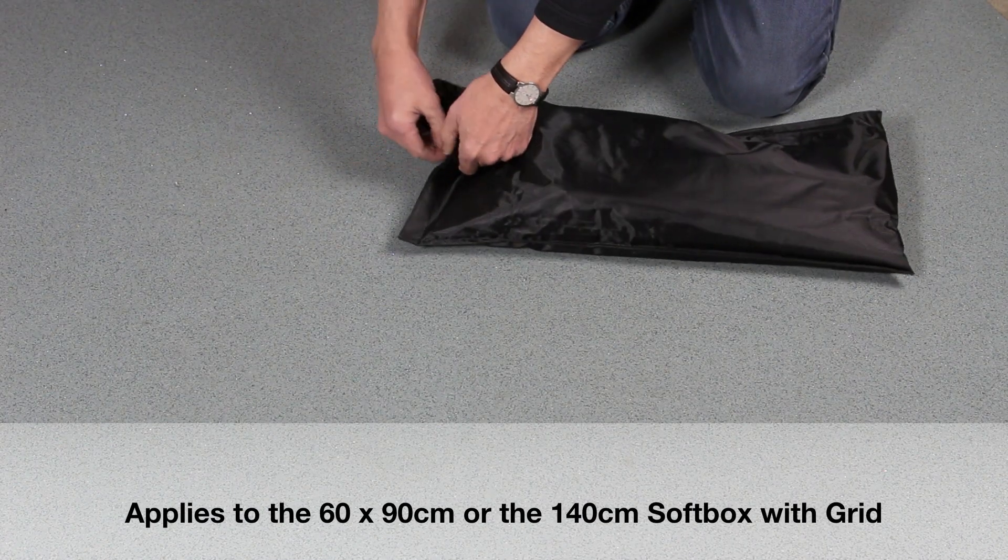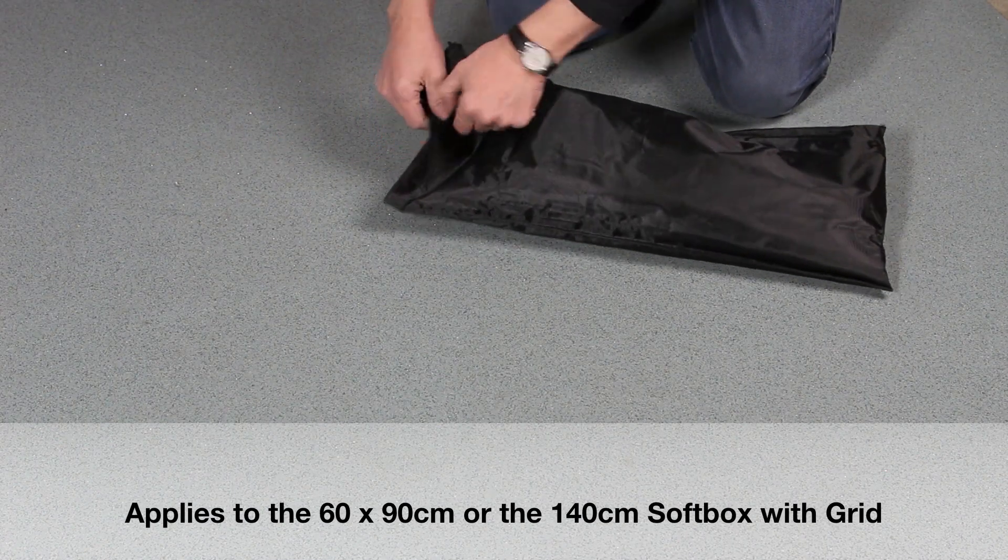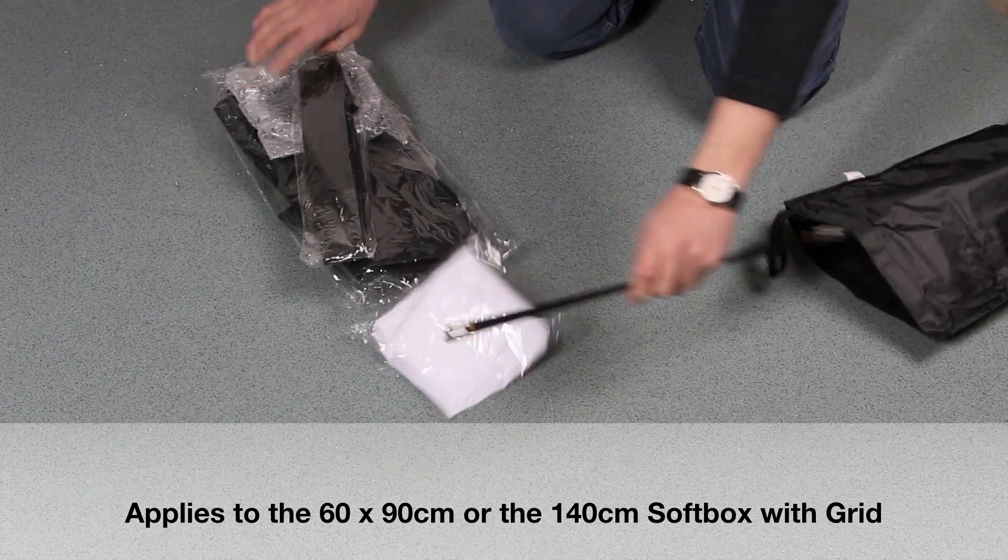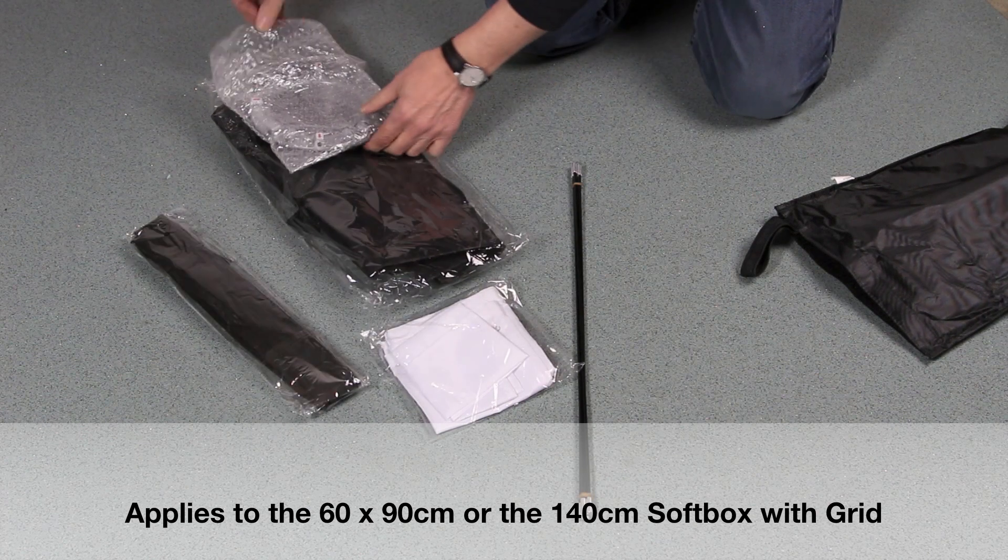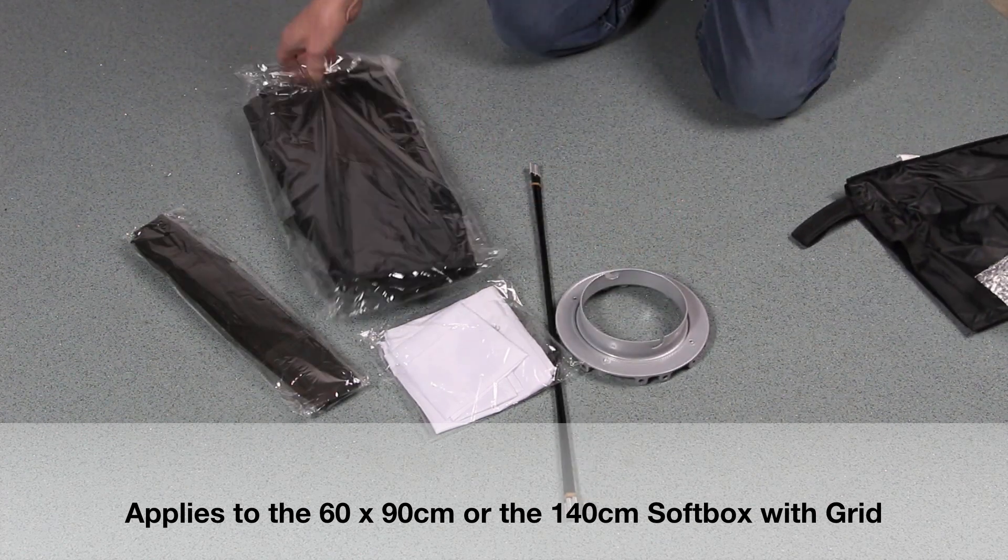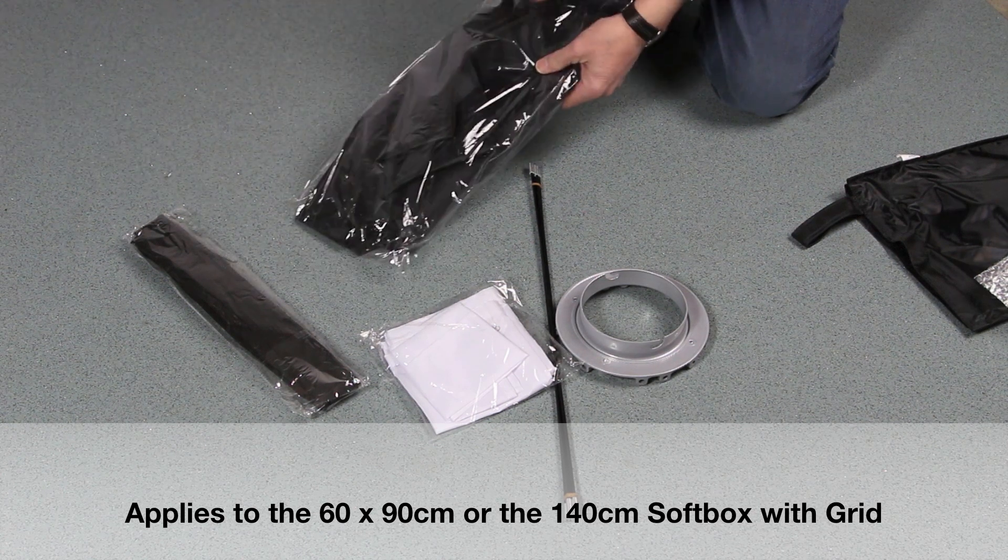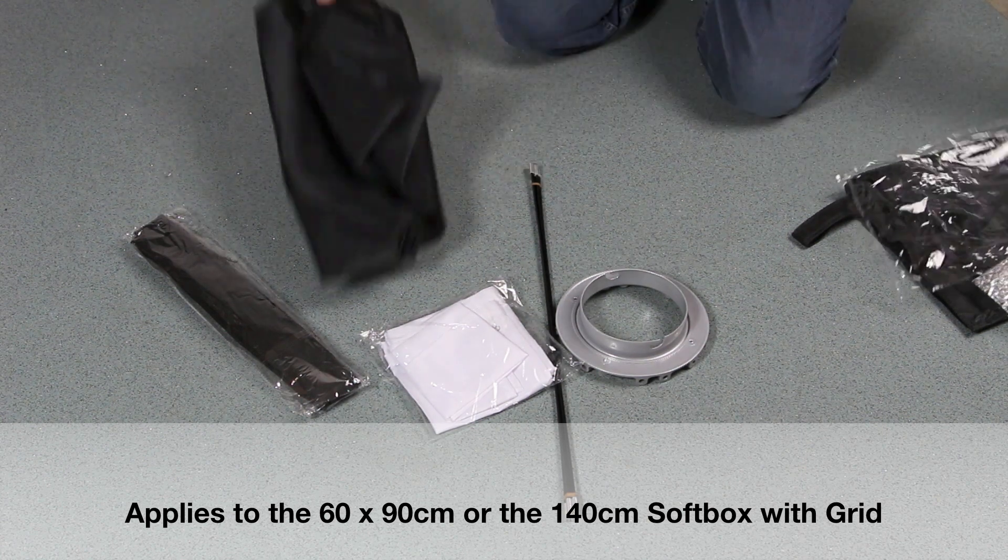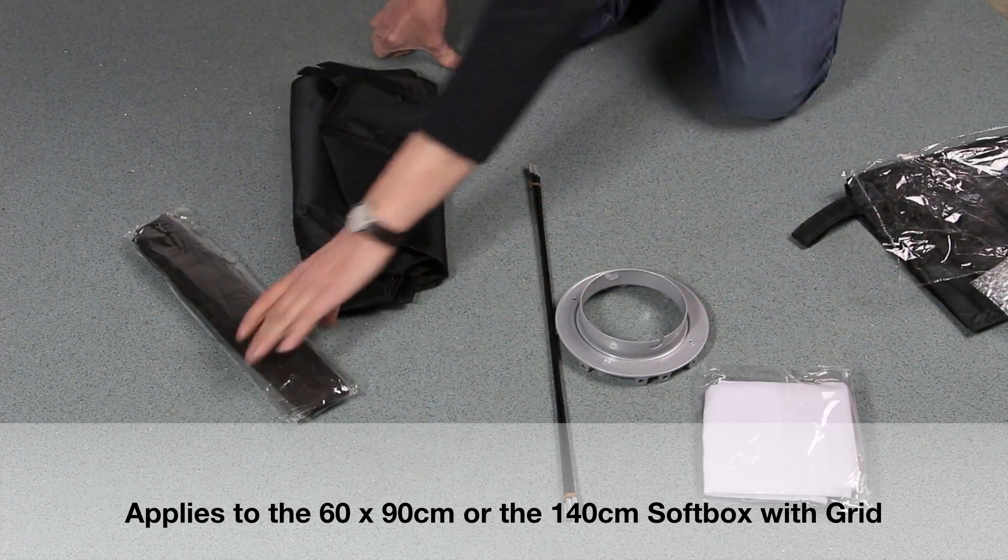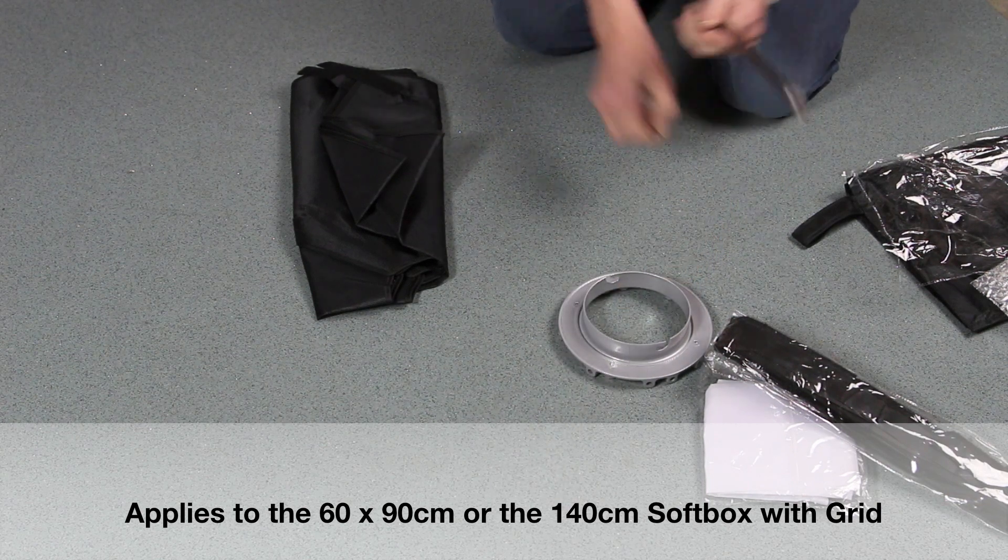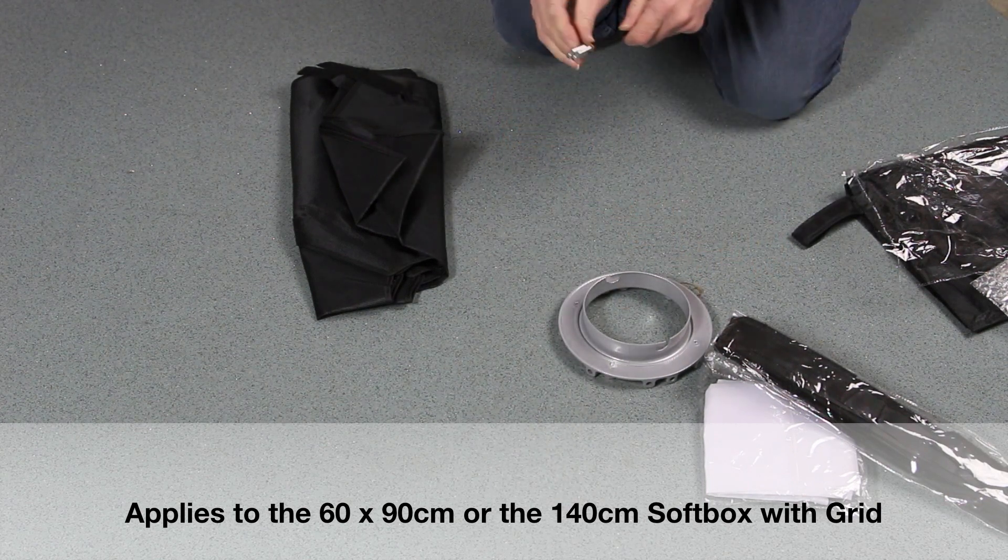This is for the 60x90 softbox with grid and also for the 140 centimeter octagonal with grid. It comes in a bag with a speed ring and rods, an outer cover, an inner cover, an outer diffuser, and the grid. This is the same for the 140 centimeter, except that you've got eight rods.